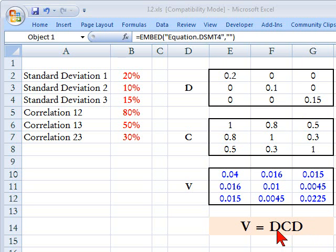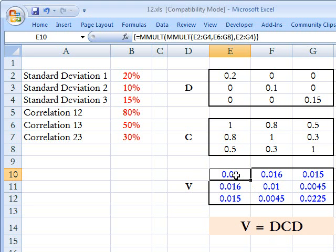So it doesn't really matter if we take D times C and then multiply that result by D, or if we take C times D and pre-multiply that by D—we'll get the same result either way.